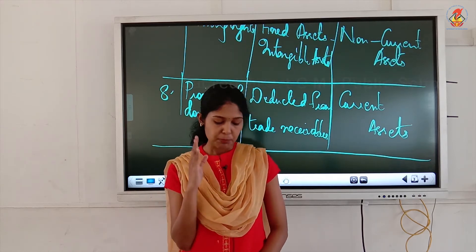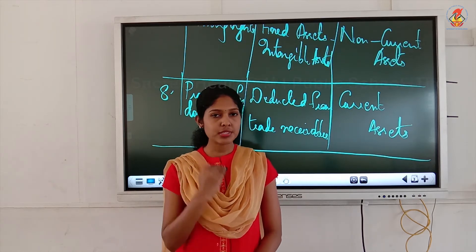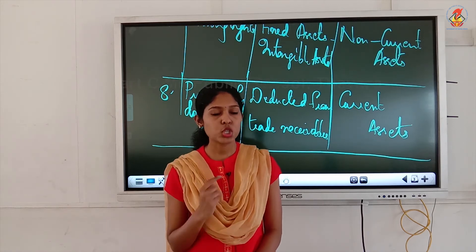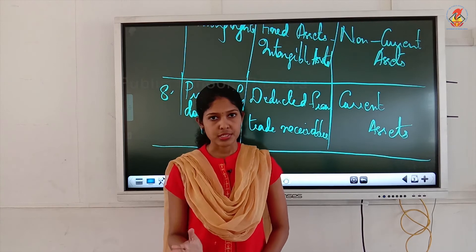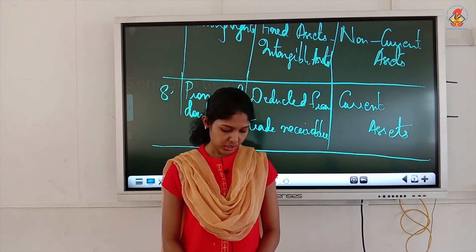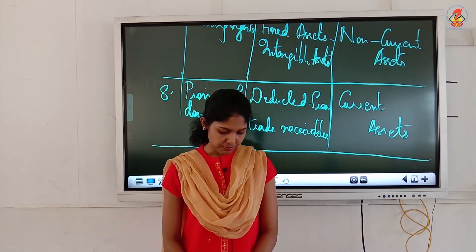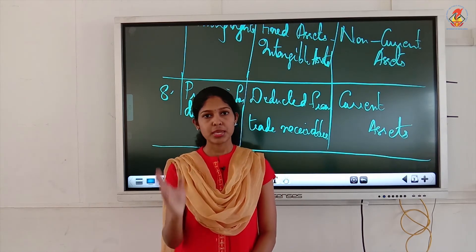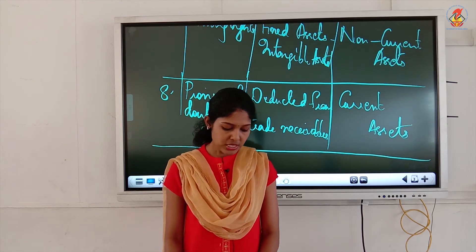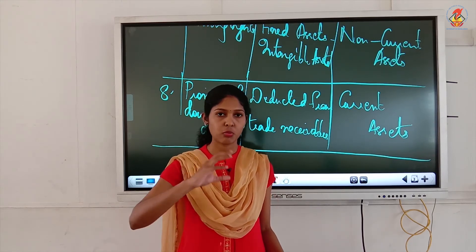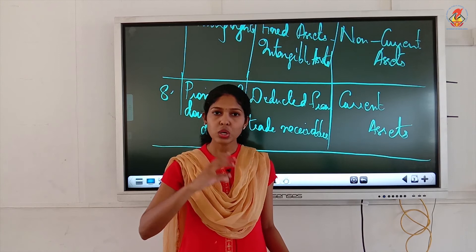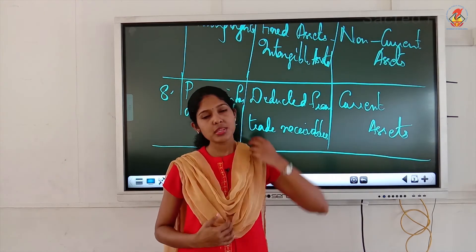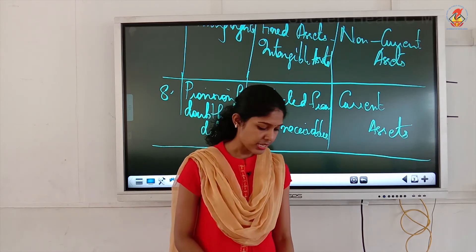Illustration 30: you must do this completely as a separate question since all items are new. First one: bills receivable — subhead is trade receivables, major head is current assets. Second one: sundry debtors — same subhead trade receivables, major head is current assets. Third one: long-term investments — the question itself indicates the answer. Subhead is non-current investments and the major head is non-current assets.